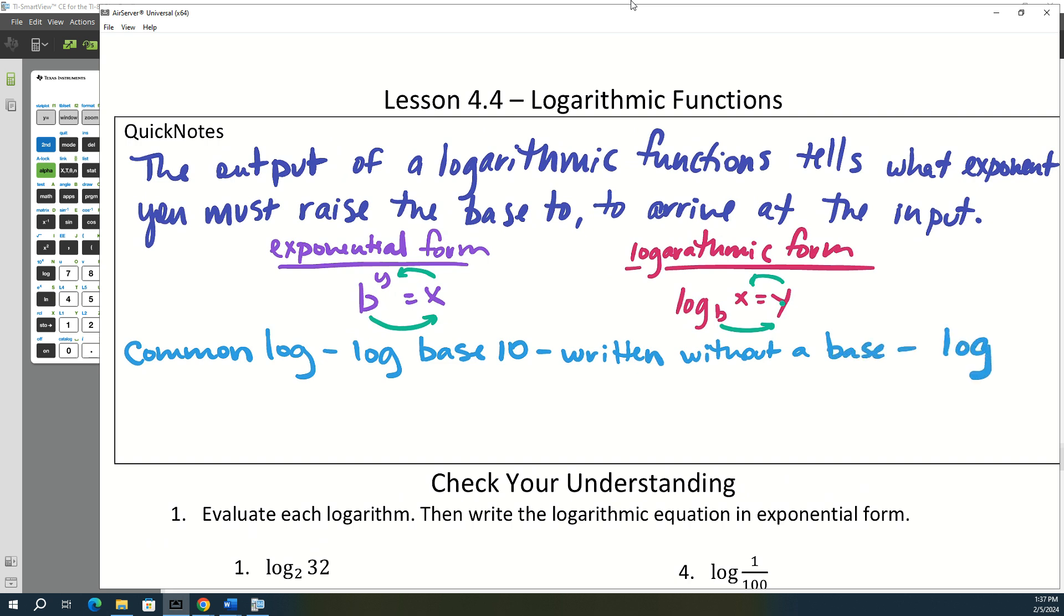So it's just written log, and there's a log button in the calculator. It's right beside seven. So if it's log base 10, you don't have to do the alpha window. You can just hit that button. Do you guys know the other special logarithm?